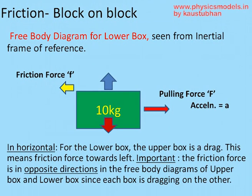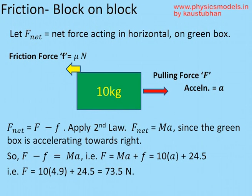Applying the resultant principle, the green mass accelerates to the right with acceleration A. By Newton's second law, F_net = MA. The net force is the pulling force minus the backward friction force, so F − friction = MA. Therefore the pulling force F = MA + friction = 10×A + 24.5. This gives F = 10×4.9 + 24.5 = 73.5 Newtons.